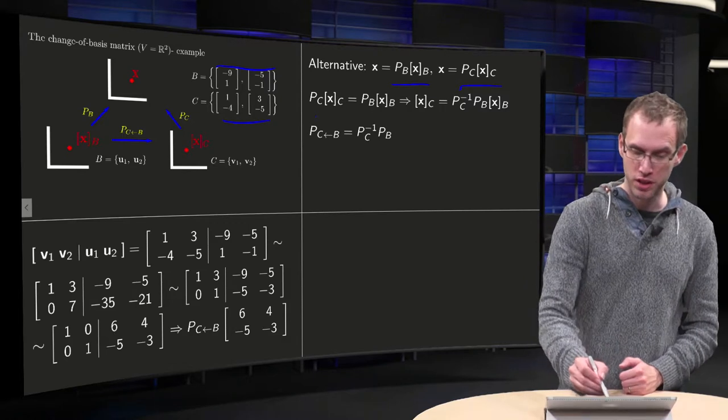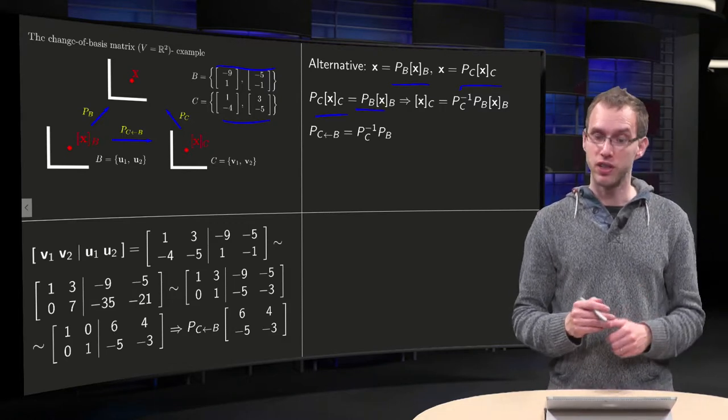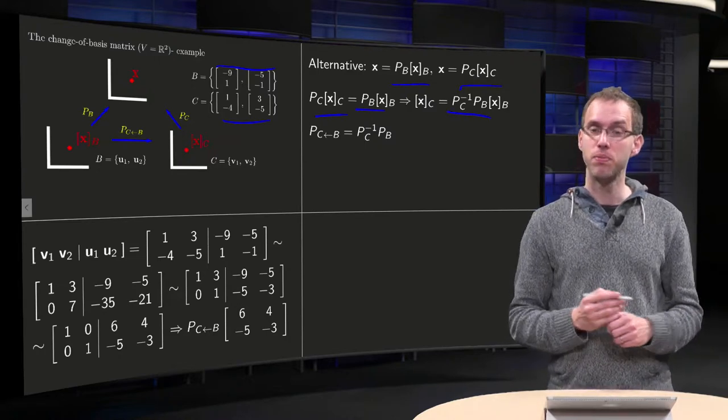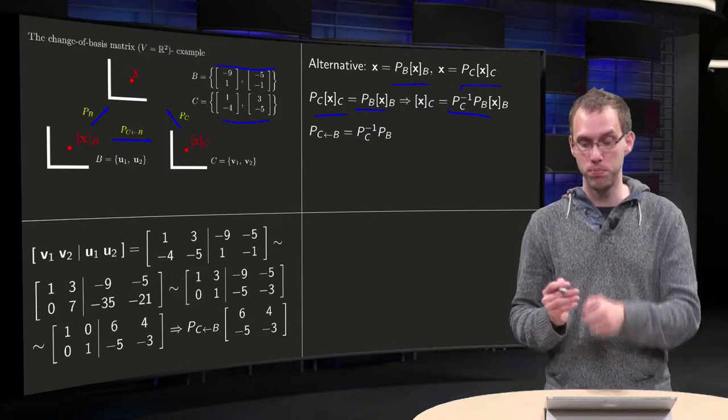Now, X equals X, so PC times XC equals PB times XB. And we can solve for XC using PC inverse. So we have XC equals, multiply on the left by PC inverse, so XC equals PC inverse times PB times XB.